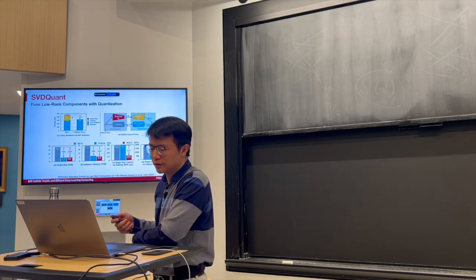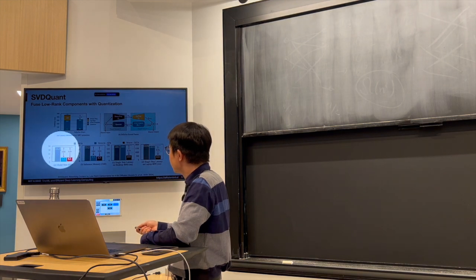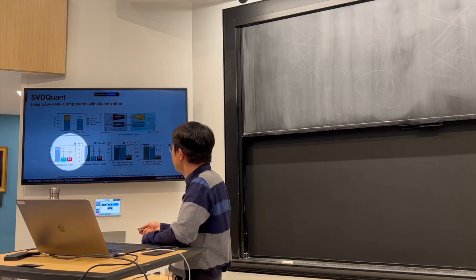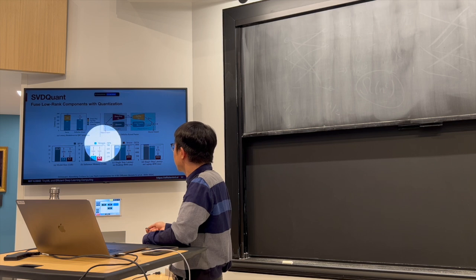So this is the kernel fusion. This is the speedup and the model size reduction. So for BF16, we can reduce it by 3.6 times. For the W4A16 method, conventional NF4, we can also reduce the model size, and also reduce the memory. We can reduce a bit more, since we are also quantizing the activation.